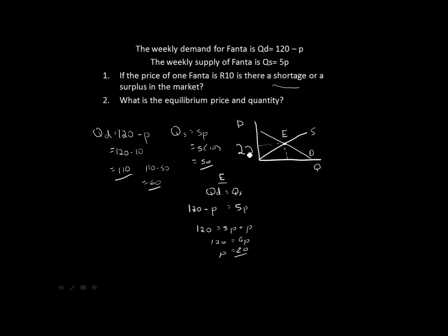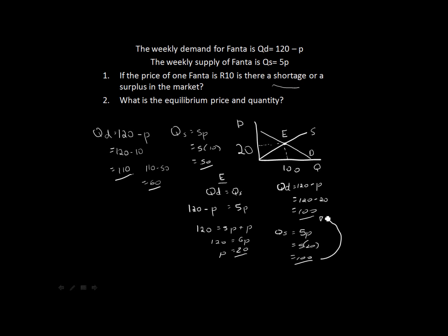Our equilibrium price is 20. Now we need to find our equilibrium quantity by filling the equilibrium price into either function. Using the demand function: 120 minus 20 equals 100. For illustrative purposes, using the supply function as well: 5 times 20 also equals 100. Both give the same equilibrium quantity of 100.